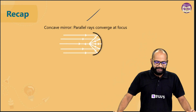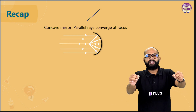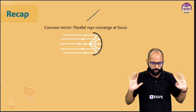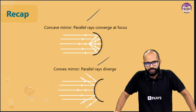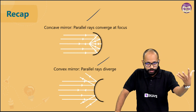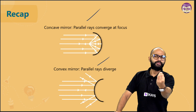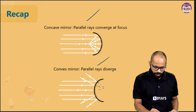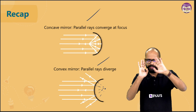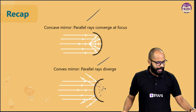A quick recap: concave mirrors are converging mirrors — parallel light rays fall on them and after reflection they converge at a point called the focus. Convex mirrors are diverging mirrors — parallel rays fall on them and get diverged. Behind the mirror, if you trace those rays backwards, they all appear to meet at a point which we call the focus of the convex mirror.